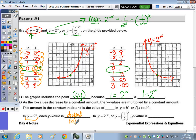Over on the right side, for y equals 2 to the negative x, your x values are still increasing by 1, but on the y values they're now being multiplied by one-half, or the values are halved.